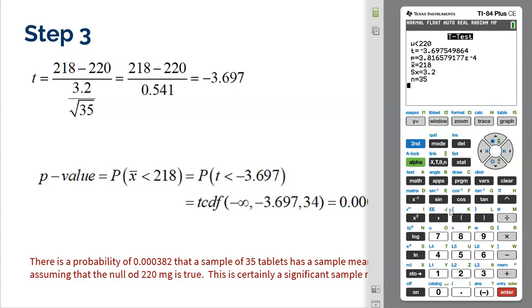And then it also gives us that p-value of 0.000382. Now the calculator is awesome. It doesn't do any rounding. It keeps everything nice and perfect. So these are going to be the absolute best values.